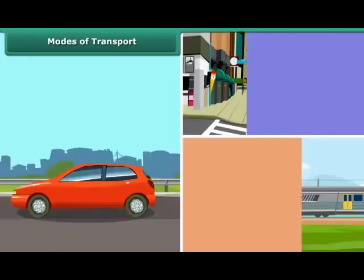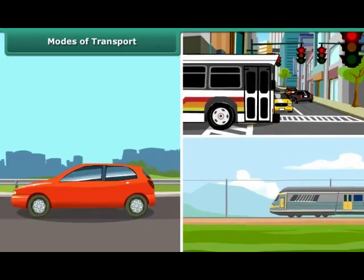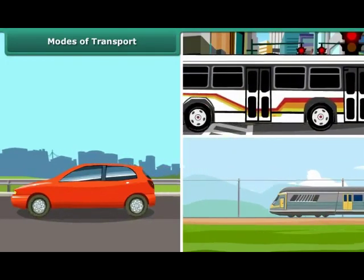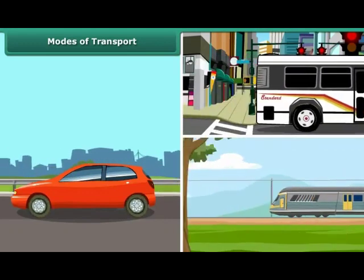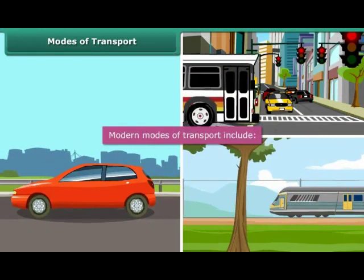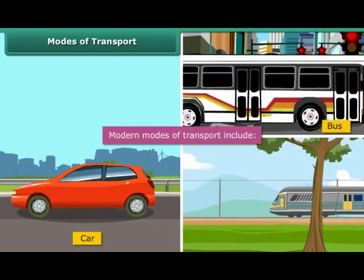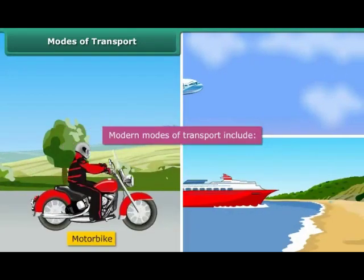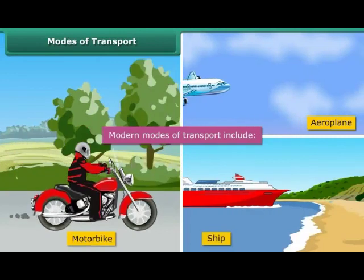Nowadays, we have progressed and we have learnt we can use fuel and natural resources to create better modes of transport. As you can see, hence we now have cars, buses, roads, railways, motorbikes, aeroplanes, ships etc. to travel.